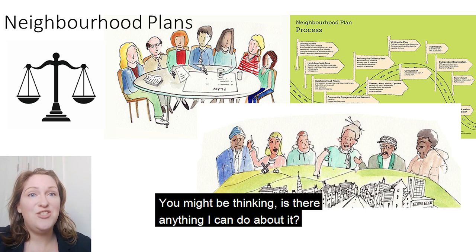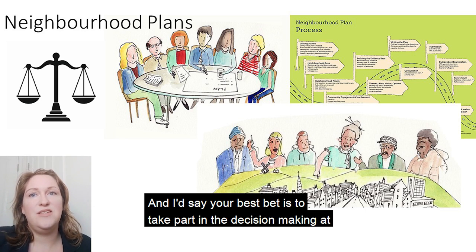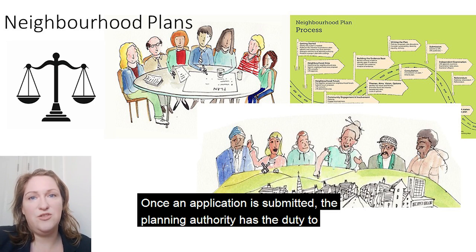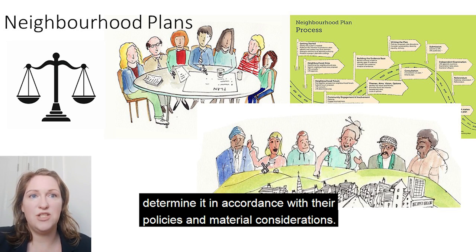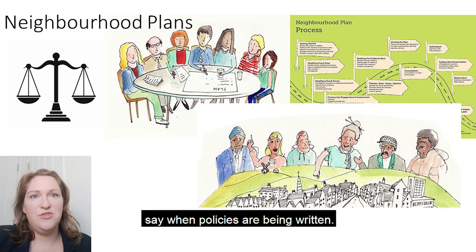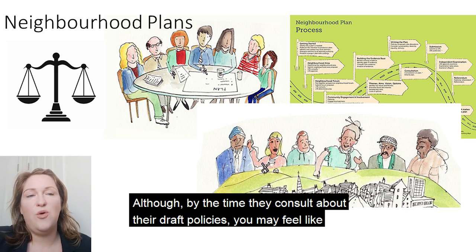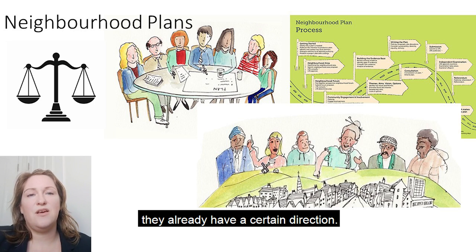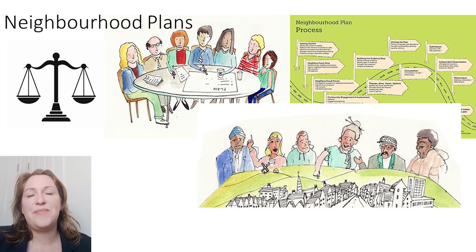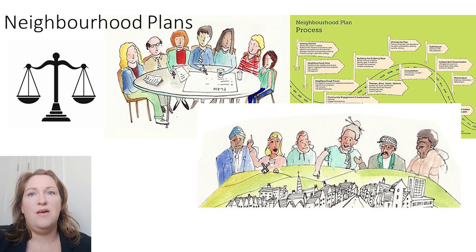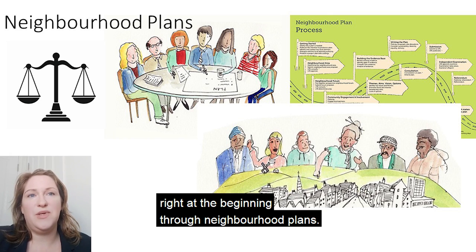You might be thinking, is there anything I can do about it? I'd say your best bet is to take part in the decision making at the earliest possible opportunity. Once an application is submitted, the planning authority has the duty to determine it in accordance with their policies and material considerations. So to have the most effective influence you need to have your say when policies are being written. Local plans are reviewed every five years and local authorities do consult on their policies, although by the time they consult about their draft policies you may feel like they already have a certain direction. Do they have to listen to me? Do I have any power here? The local authority doesn't have to get the approval of its residents to adopt the local plan. But you can get involved in policy development right at the beginning through neighbourhood plans.